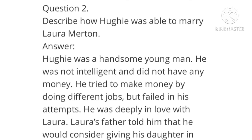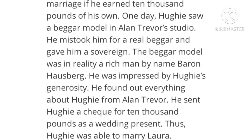Question number 2: Describe how Huey was able to marry Laura Merton. Answer: Huey was a handsome young man who was not intelligent and did not have any money. He tried to make money by doing different jobs but failed. He was deeply in love with Laura. Laura's father told him he would consider the marriage if Huey earned 10,000 pounds of his own. One day Huey saw a beggar model in Alan Trevor's studio and mistook him for a real beggar, giving him a sovereign. The beggar model was in reality Baron Hussberg, who was impressed by Huey's generosity. He found out everything about Huey from Alan Trevor and sent Huey a cheque for 10,000 pounds as a wedding present. Thus, Huey was able to marry Laura.